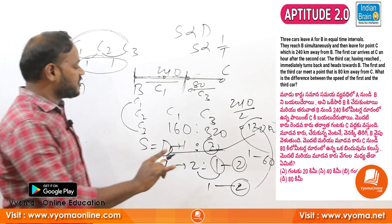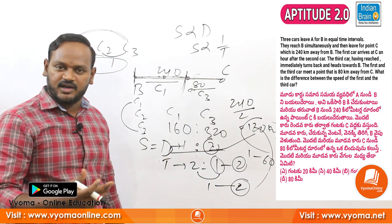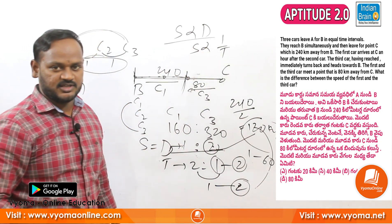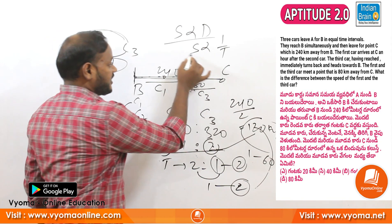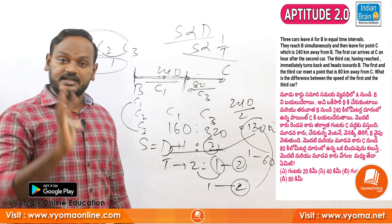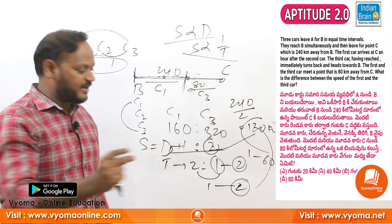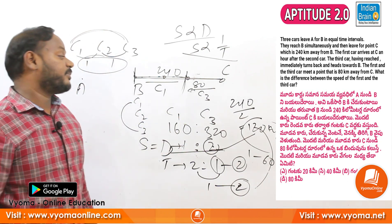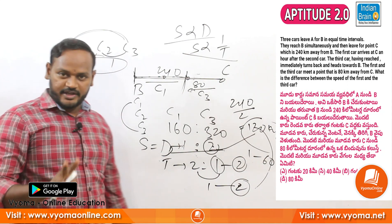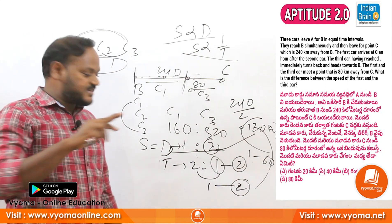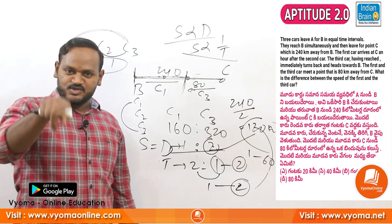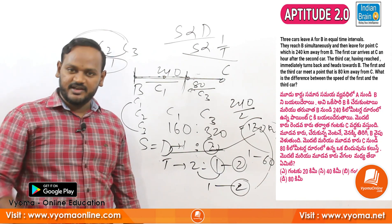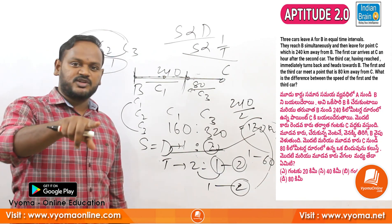Let's make it simple. Speed is directly proportional to distance whenever time is common. Speed is inversely proportional to time whenever distance is common. If you understand these two universal facts, you can solve these questions within 20 to 30 seconds. This is the power of universal facts.